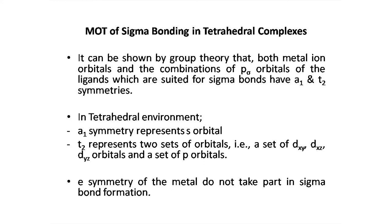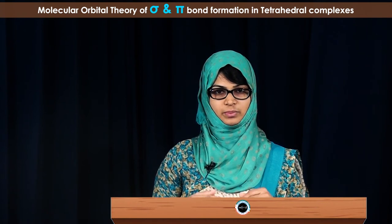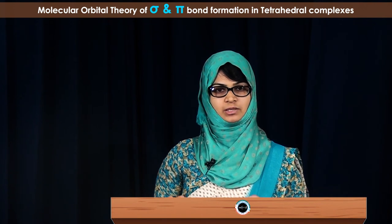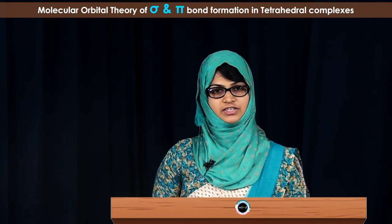Here A1 represents the S orbital, and T2 represents the D orbitals — DXY, DYZ, and DZX — as well as the P orbitals. This explains why in tetrahedral complexes, D does not have pure D-electron character; it has a mixed property from the P orbital as well, since they share the same T2 symmetry. The ligand combination also provides the same symmetry, so there will be a combination of A1 symmetry of the S orbital of the metal with the A1 symmetry of the ligand sigma combination to give the A1 bonding and A1 anti-bonding molecular orbitals.